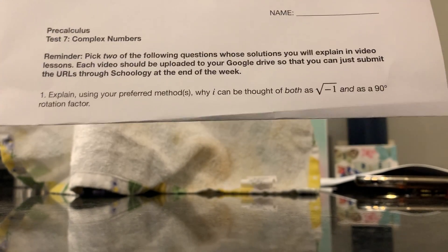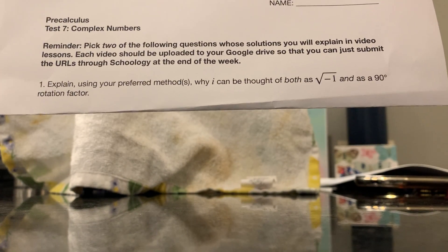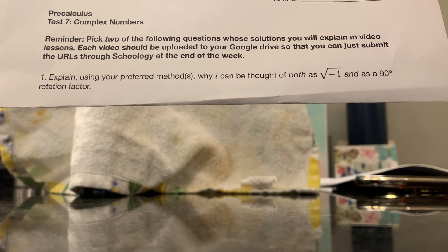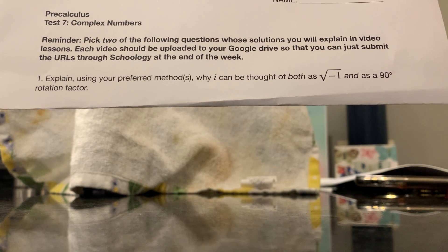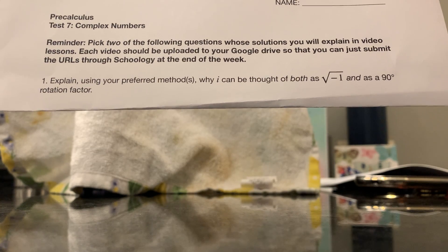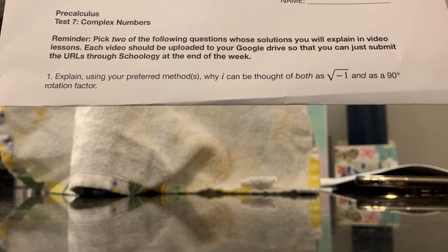Today we have number one. Explain why, using your preferred methods, why i can be thought of as both the square root of negative one and as a 90-degree rotation factor.